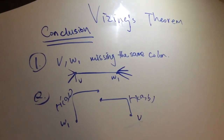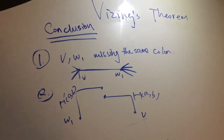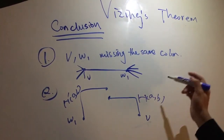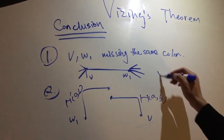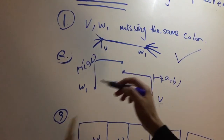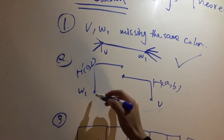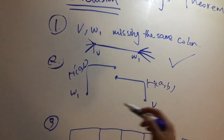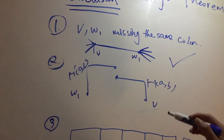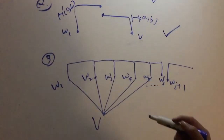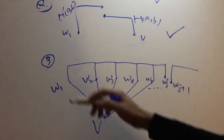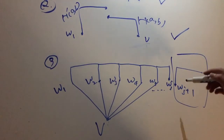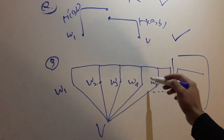In conclusion, we have proved Vizing's theorem in all three conditions. The first condition is that V and W1 have the same missing color, so we just add the missing color between them. For the second condition, we have two disjoint Kempe chains; W1 is missing A while V is missing B, so we swap the color of one chain, giving them the same missing color, reducing to condition one. For the third condition, we have a closed Kempe chain and a disjoint part; if we swap the color of the disjoint part, it matches one of the branches in the Kempe chain, and we are done.